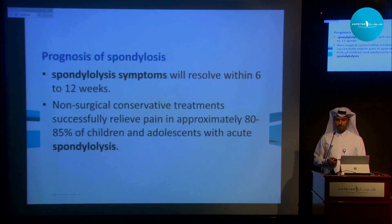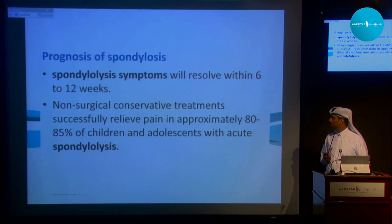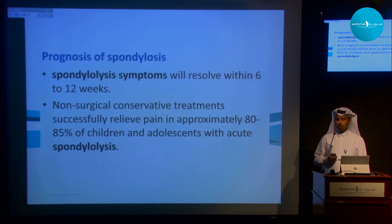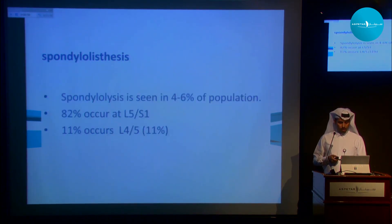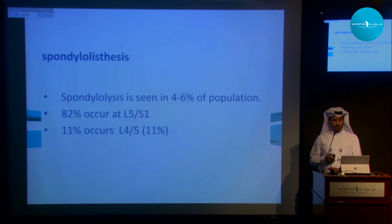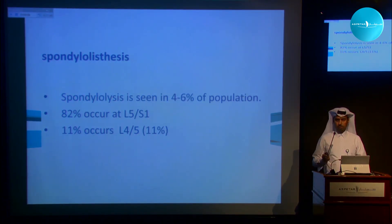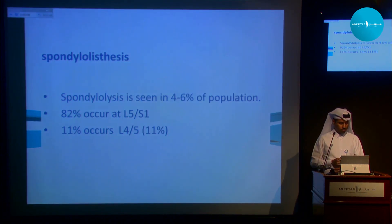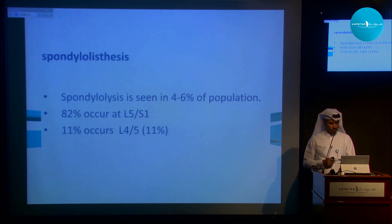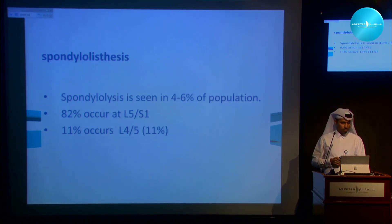Spondylolysis is usually a self-limiting condition and heals within six to twelve weeks. Non-surgical treatments are usually successful most of the time. Spondylolisthesis is seen in six to eight percent of the general population, and this usually occurs at the L5-S1 level — 82 percent at L5-S1 and 11 percent at the L4-L5 level.